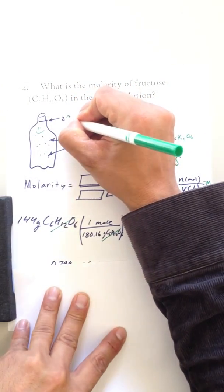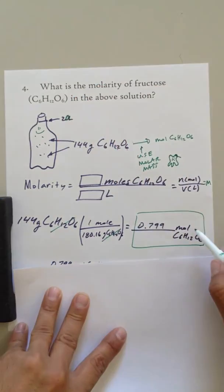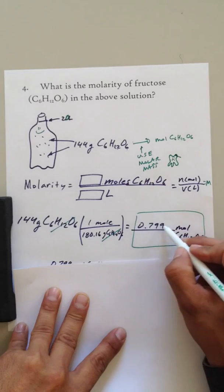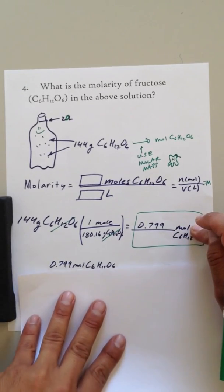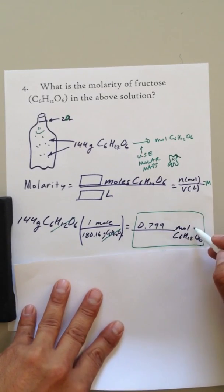I'm going to assume this is 2.0 liters, just to have two significant digits. Let's not change this until the end. So this is how many moles. Now we're ready to go.